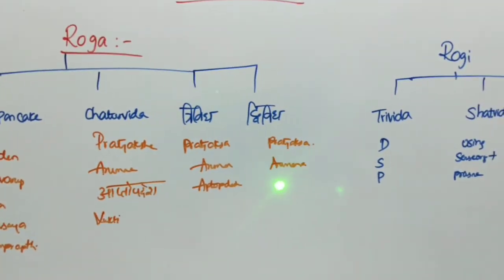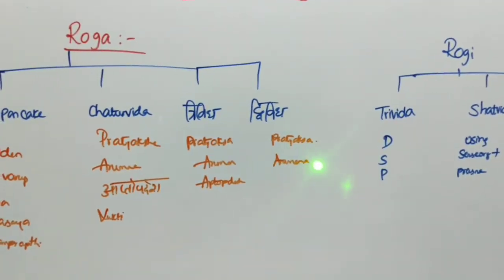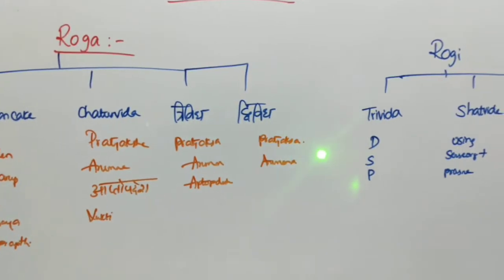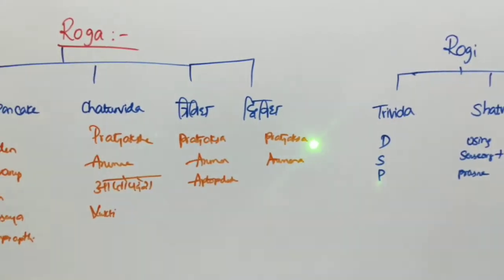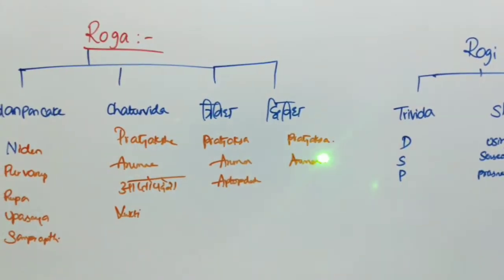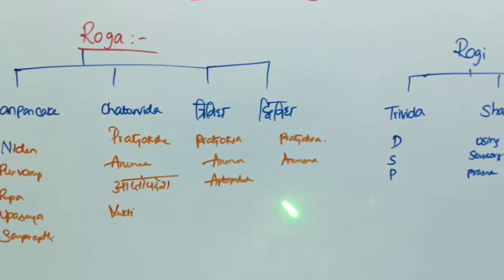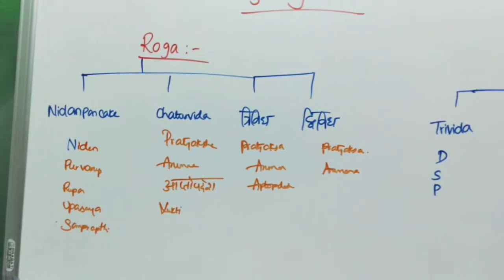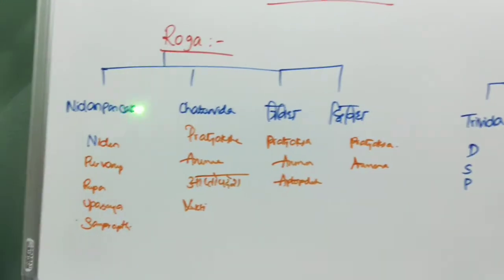Dvividha Pariksha consists of Pratyaksha and Anumana — both together form Dvividha Pariksha. Pratyaksha is through direct perception and Anumana is by inference. This clears the Roga Pariksha section.